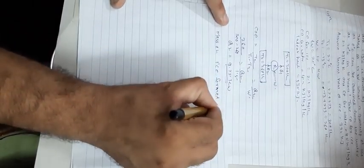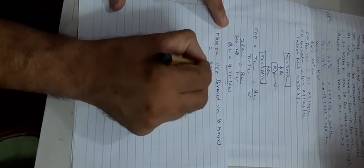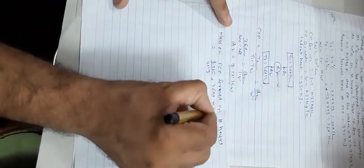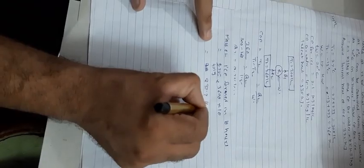Mass of ice form in 10 hours equal to 9.75 multiply by 419 multiply by 3600 multiply by 10. Therefore mass of ice form is 837.7 kg.